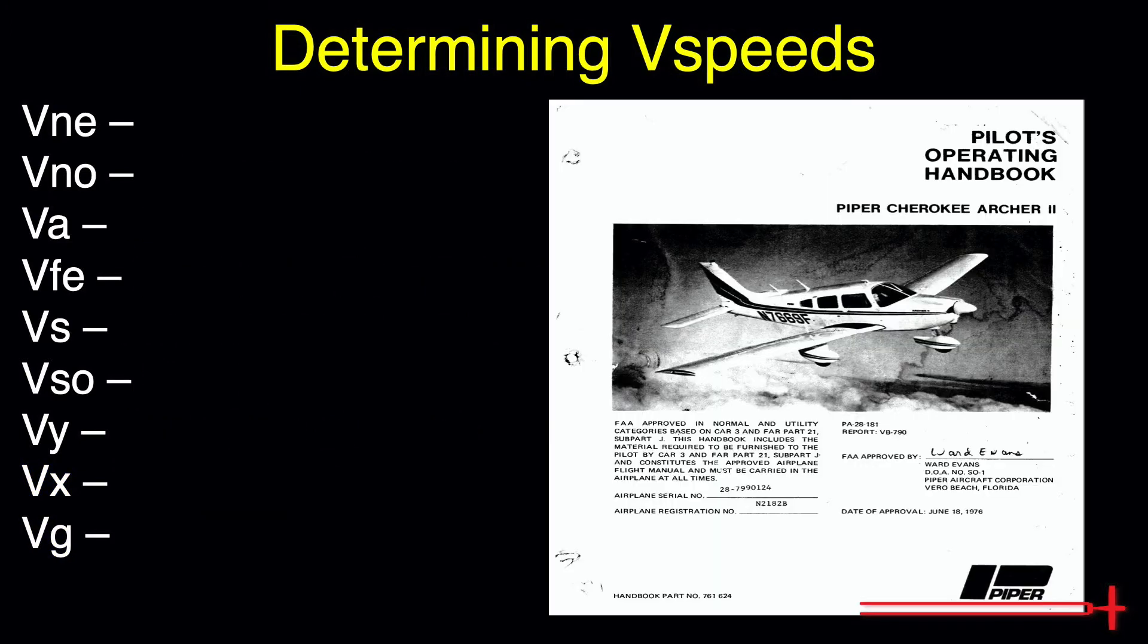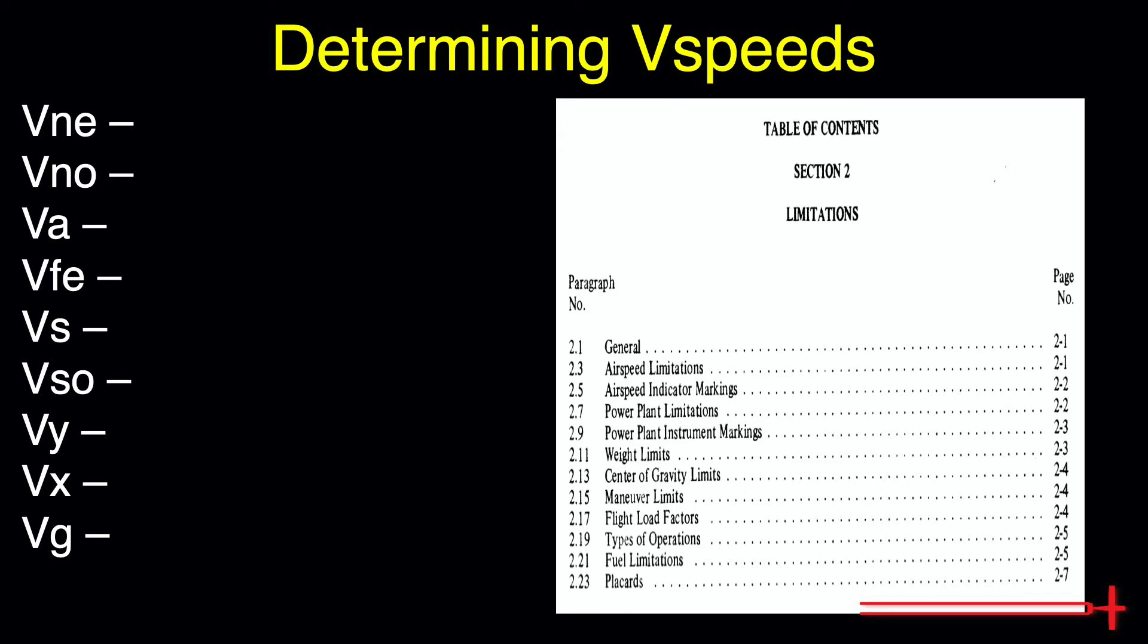We'll find these V speeds in our aircraft's POH. Beginning in section 2, limitations, we should look in the table of contents for the airspeed limitations and airspeed indicator markings pages. Let's start with the airspeed limitations page. We should refer to the indicated airspeed as we will rarely know our exact calibrated airspeed in flight.